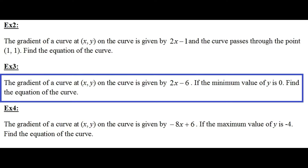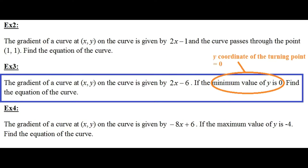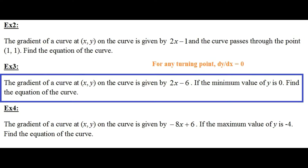Example 3: the gradient of a curve at x, y on the curve is given by 2x minus 6, so dy over dx equals 2x minus 6. The minimum value of y is 0, meaning the y-coordinate of the turning point is 0. To work out the x-coordinate, remember: for any turning point, dy over dx equals 0. We'll use that condition. The question asks to find the equation of the curve, so we integrate dy over dx.